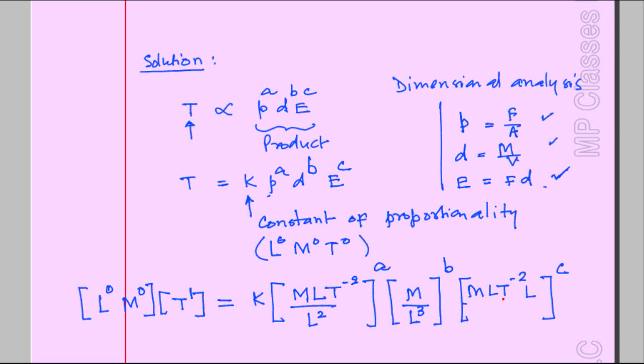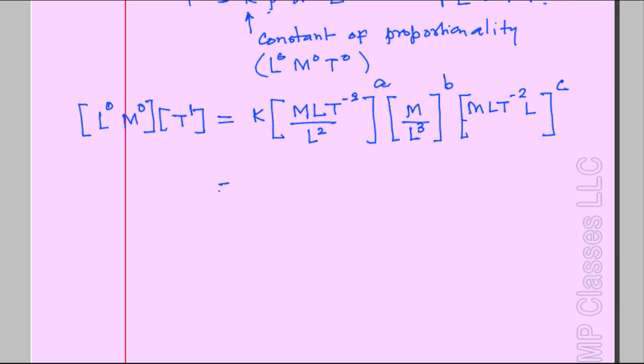We have everything in dimensional form. In dimensional formulas, we always have L, M, T in the same line brought to the numerator. This is M raised to 1, L raised to minus 1, T raised to minus 2, and I keep that exponent A. M raised to 1, L raised to minus 3 with exponent B. Here I have M raised to 1, L squared, T raised to minus 2, and exponent C.